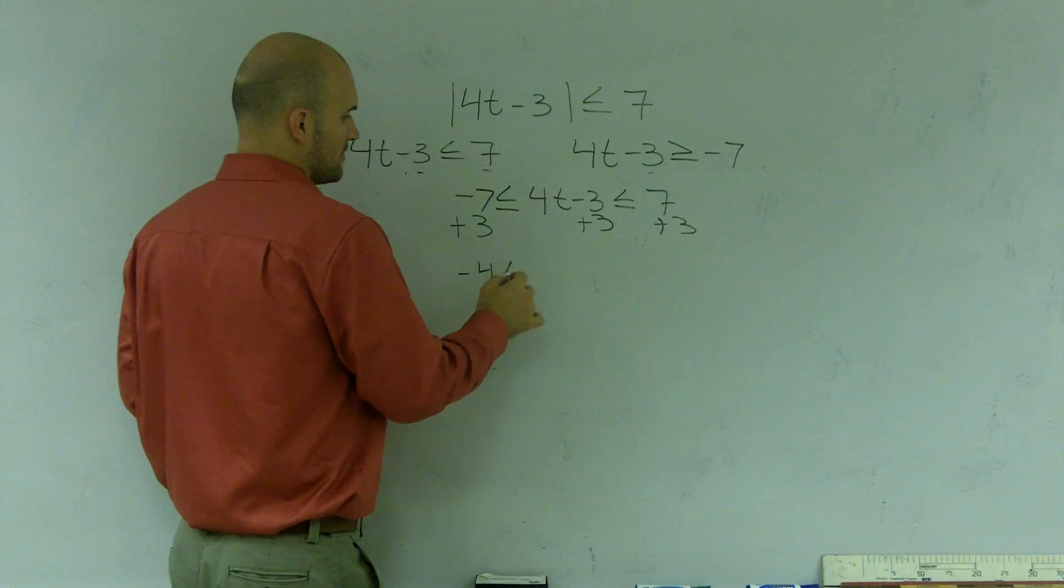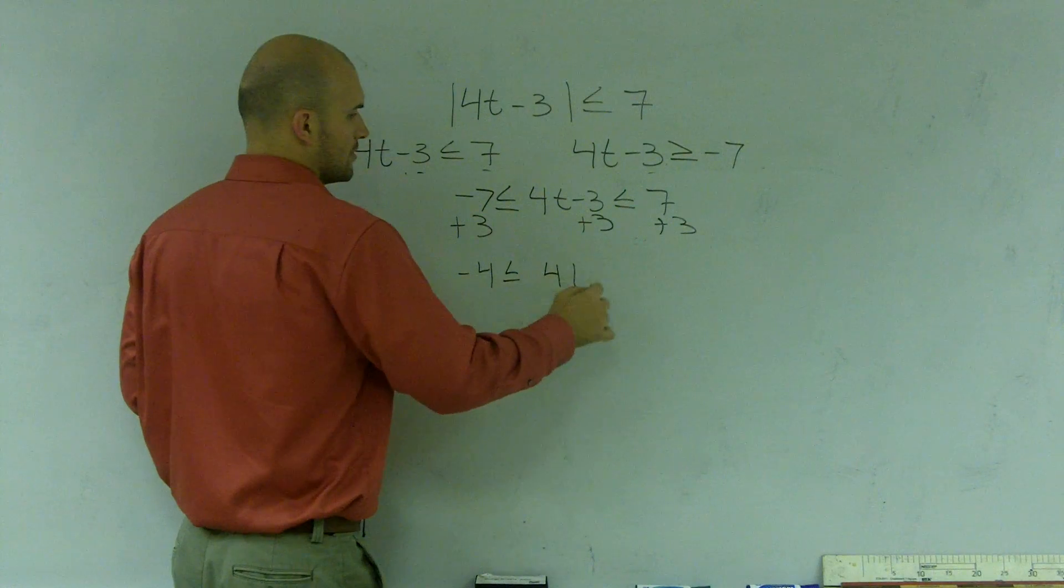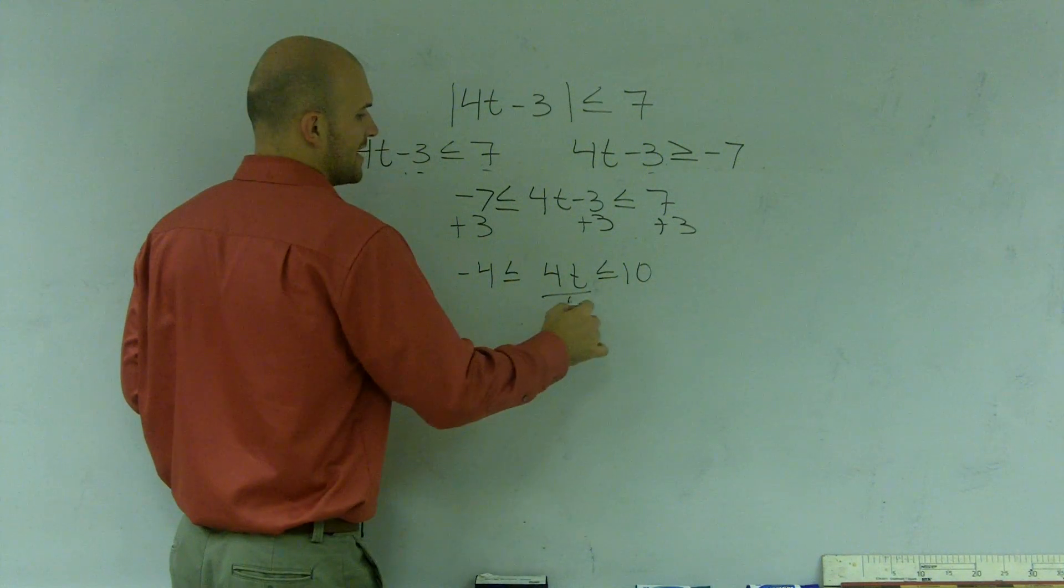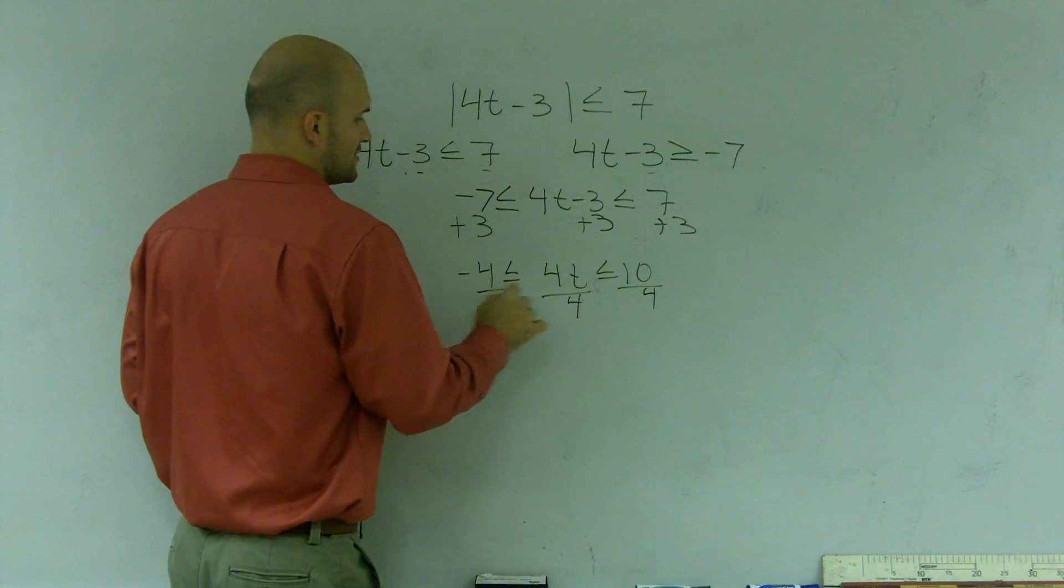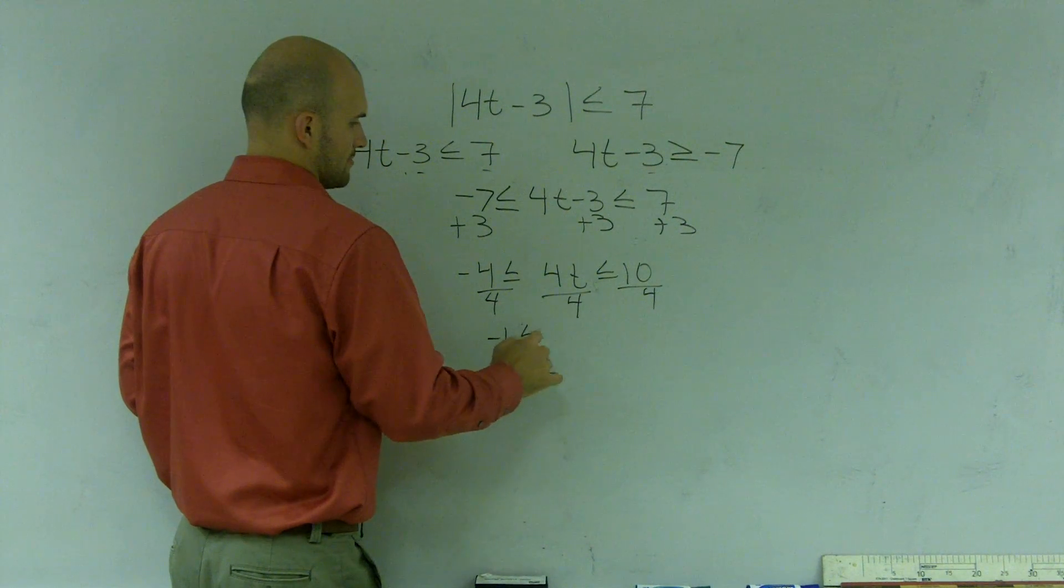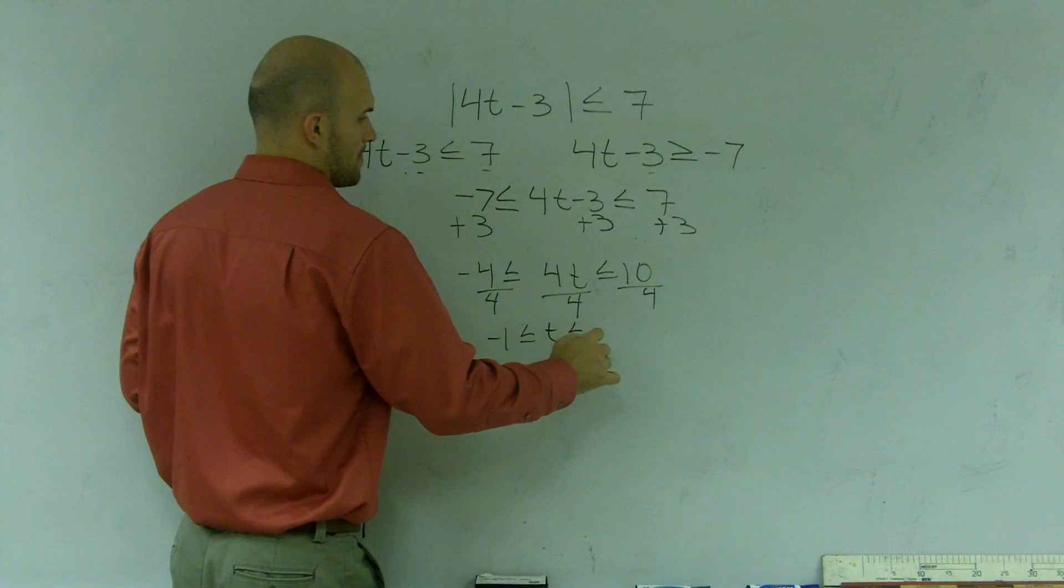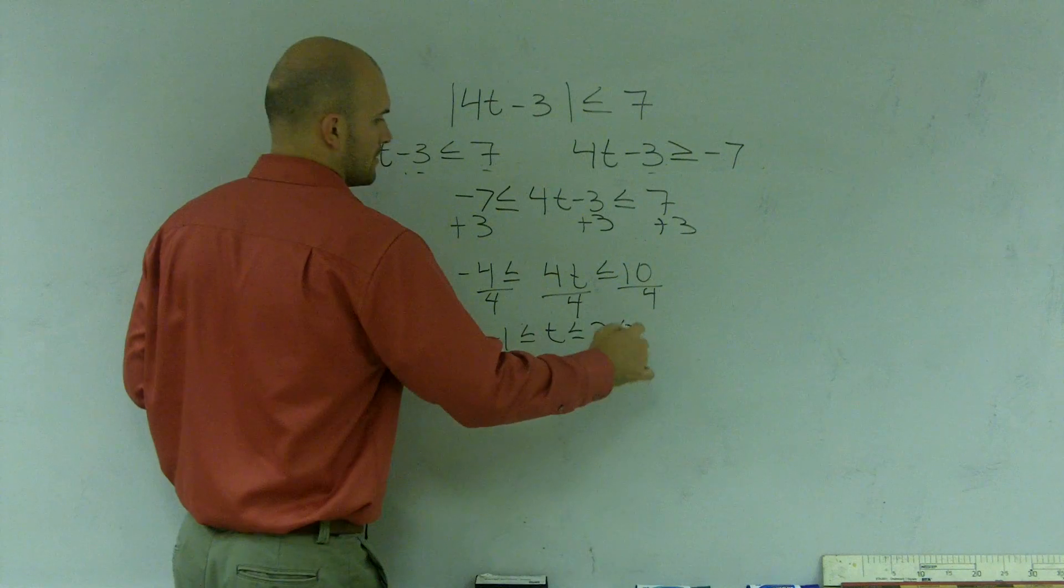So here I'm left with negative 4 is less than or equal to 4t, which is less than or equal to 10. When I divide out my 4, I do it to both sides.